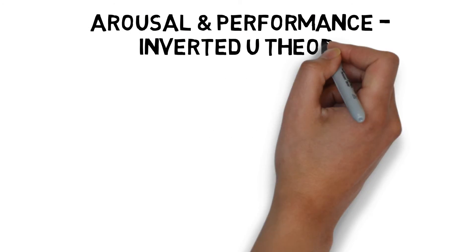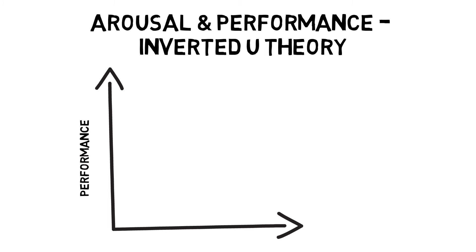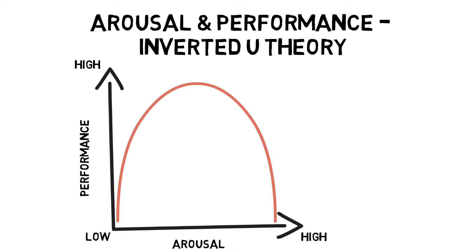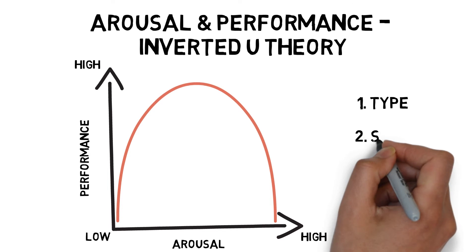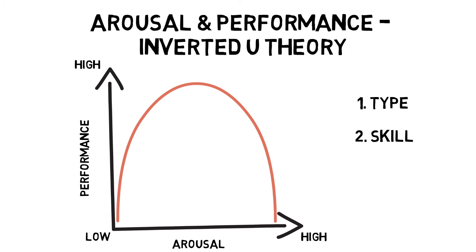Inverted U theory suggests that performance improves with arousal up to an optimal level of arousal. After this point, performance will start to deteriorate. Optimal arousal depends on the type of activity — gross skills require high arousal whereas fine skills require low arousal — the skill of the performer, where a more skillful performer can sustain a higher optimal level of arousal, and the personality of the performer, where the more extrovert the performer, the higher the arousal levels needed for optimal performance. However, a criticism of this theory is that when arousal is too high, there is not always a gradual drop in performance; sometimes it can be a sudden drop.